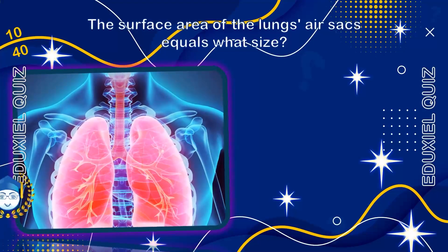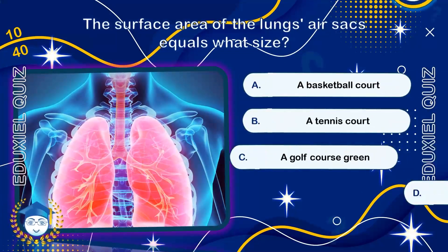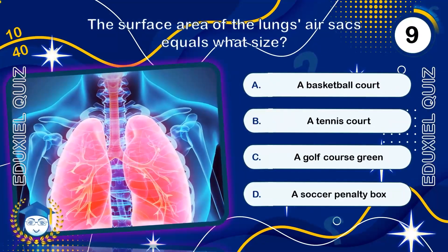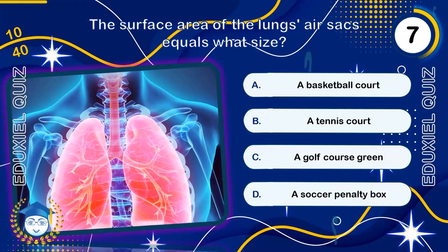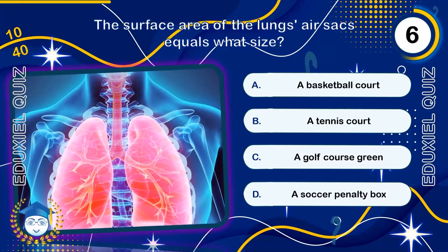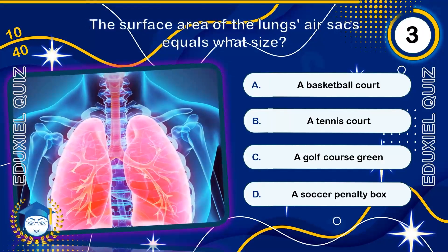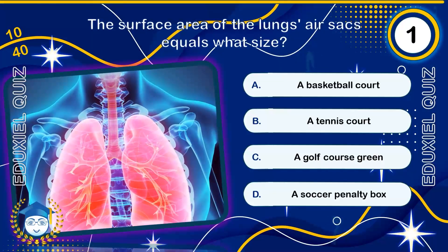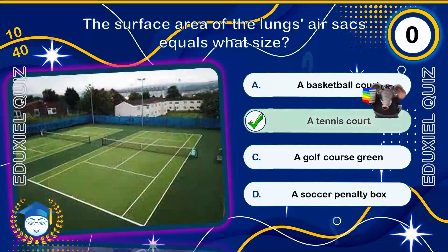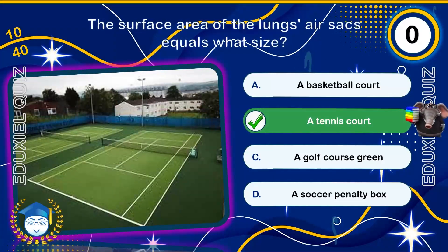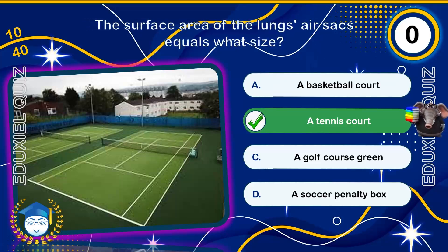The surface area of the lungs' air sacs equals what size? A tennis court. The millions of tiny alveoli provide an estimated surface area of 70 to 100 square meters for efficient gas exchange.